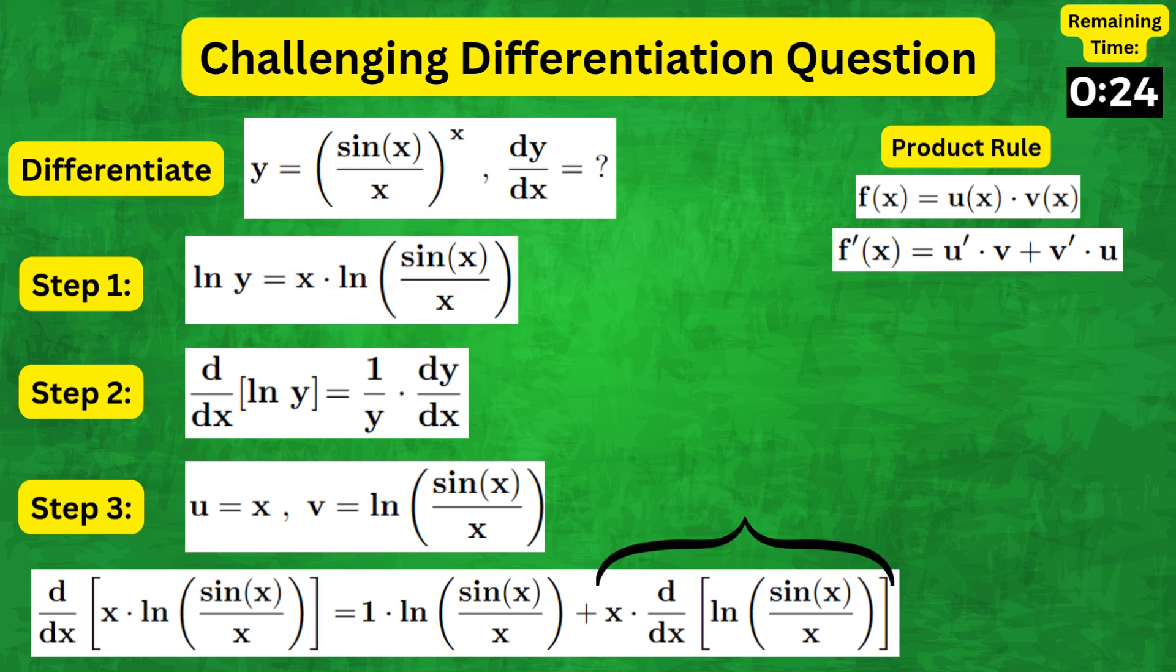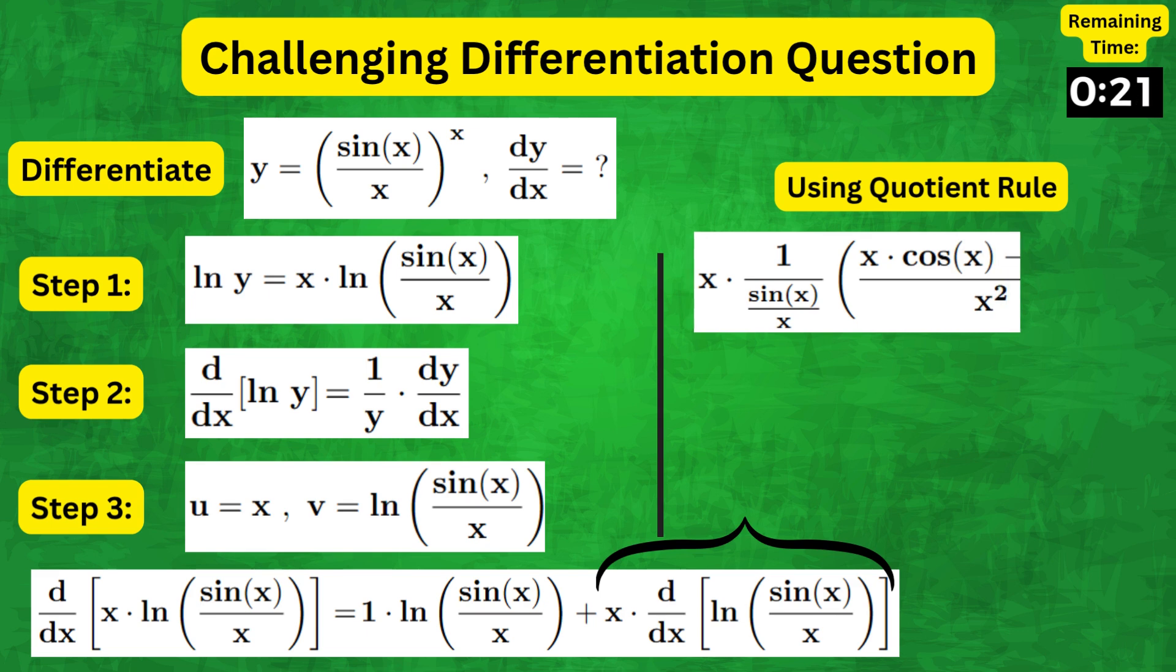Then for this second term, we have x times 1 over sine x over x times x cos x minus sine x over x squared.